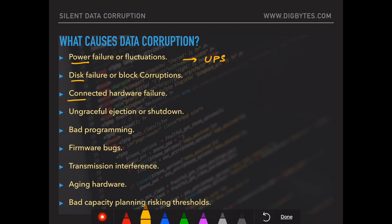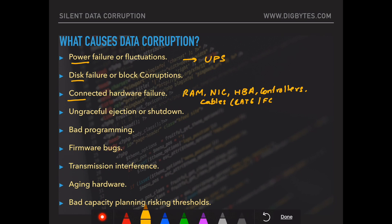Connected hardware failures: there are multiple hardware components which are interconnected to perform work on data. There is hardware like RAM, network interface card, host bus adapter, controllers, cables — even cables malfunction. You could have Cat 6 cables or FC fiber channel cables. Even ports can have issues; sometimes the physical connecting ports on your machine might have a loose connection. Any hardware could fail during its course of use and contribute to data corruption.